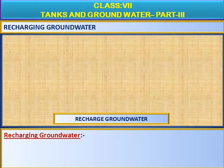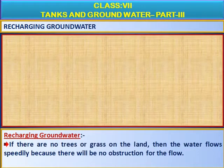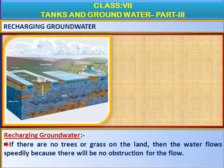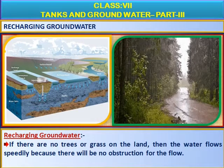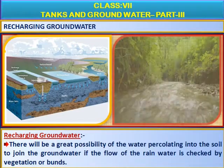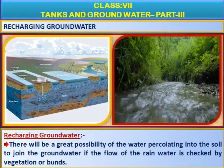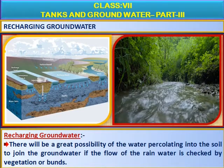Now let us start — how water recharges in the ground. If there are no trees or grass on the land, then the water flows speedily, because there will be no obstruction for the flow. Then water will not percolate into the ground. There will be a great possibility of water percolating into the soil to join the groundwater if the flow of rainwater is checked by vegetation or bunds.